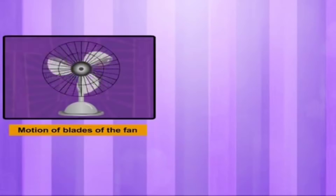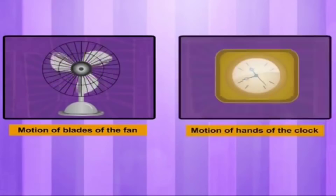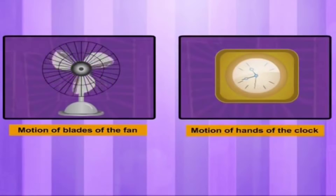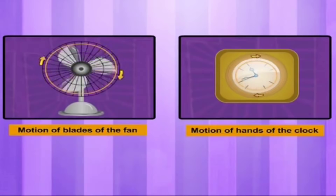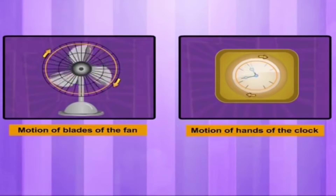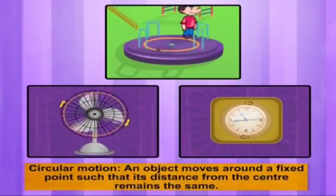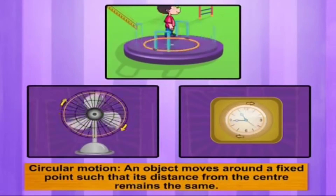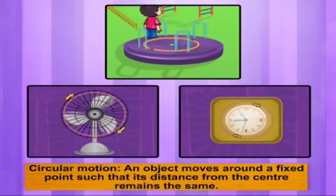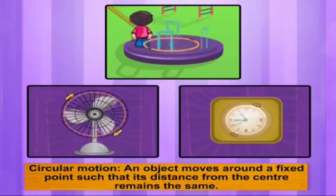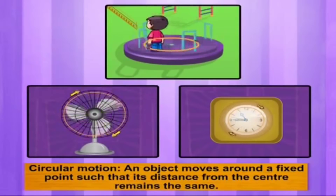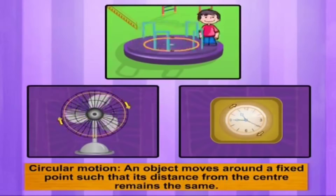Observe the motion of the blades of the fan or the hands of the clock. In both these motions, an object is moving around a center fixed point or an axis. When an object moves around a fixed point such that its distance from the center remains the same, it is called circular motion.